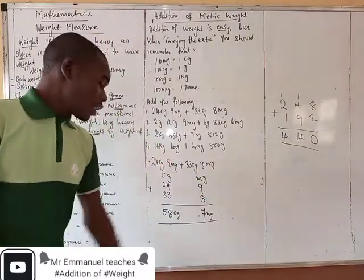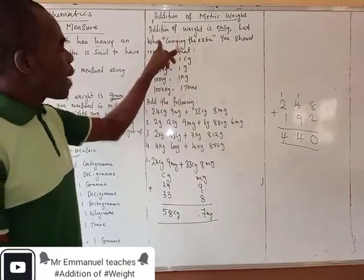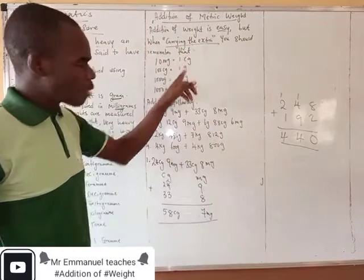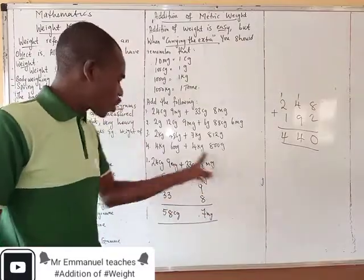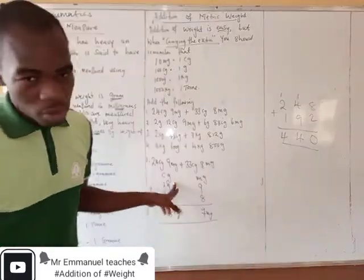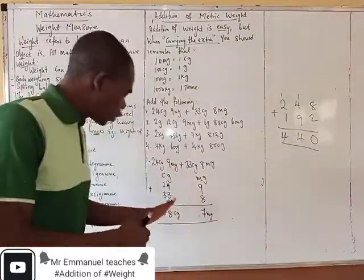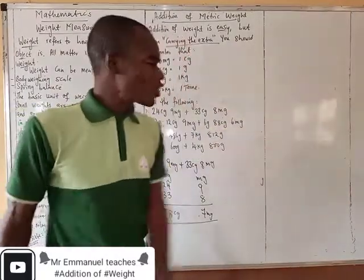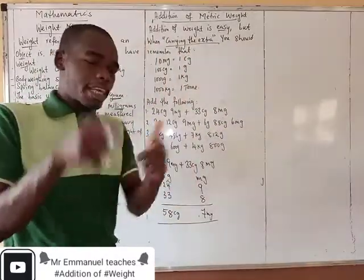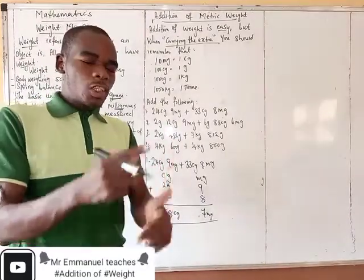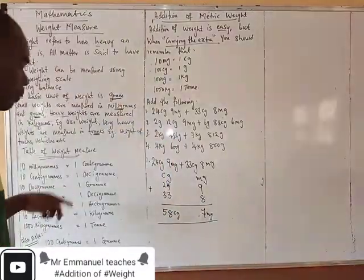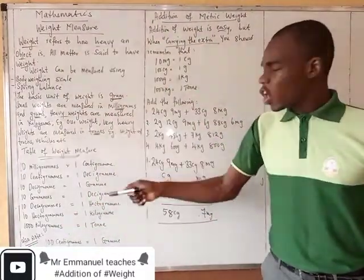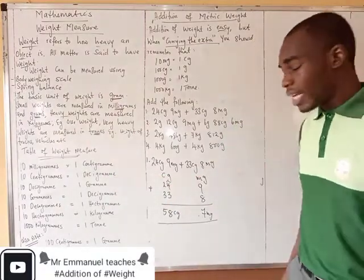Very simple. That's how we said: when carrying the extra, remember that 10 milligrams is 1 centigram. When you remove that 10 and it comes to the centigram section, it's no longer 10 — it becomes 1. Have you seen the difference between this addition and normal addition? It's very simple, but it's technical — technical because it still brings us back to this table. As long as the weight series is concerned, if you don't know this table, you're going to struggle.